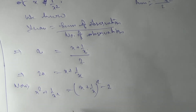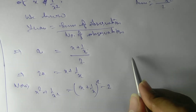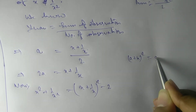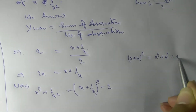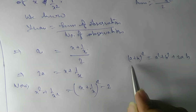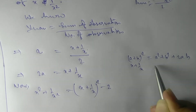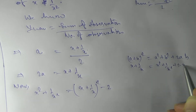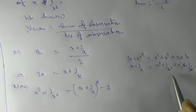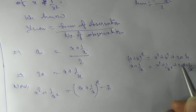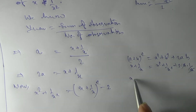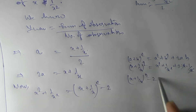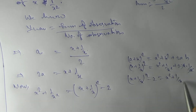We use the identity (a + b)² = a² + b² + 2ab. Here a = x and b = 1/x, so (x + 1/x)² = x² + 1/x² + 2·x·(1/x). Since x cancels, we get x² + 1/x² + 2. Rearranging, x² + 1/x² = (x + 1/x)² − 2.